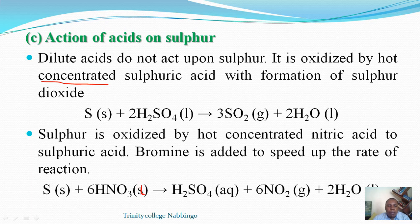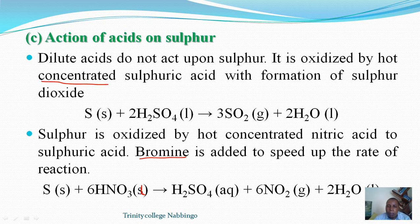For nitric acid, to speed up the rate of reaction, we may need to add a little bit of bromine. The reason is that these two acids — concentrated sulfuric acid and concentrated nitric acid — are strong oxidizing agents, so they are able to react with sulfur when hot and concentrated. If in dilute form, the reaction does not occur because dilute acids are not strong oxidizing agents. That is something very important for us to learn.